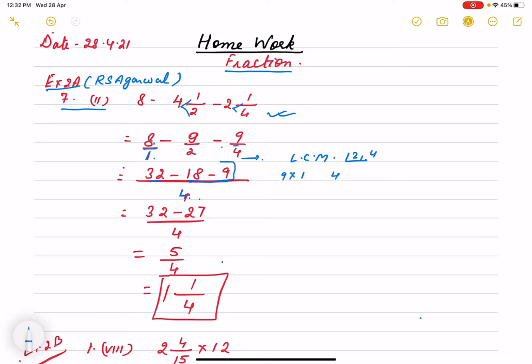Now, these two are negative. So we will add with sign of negative. So 32 minus 27 is 5 by 4. If we change into mixed fraction, it is 4, 1-ja, 4 plus 1. That is 1 1/4.